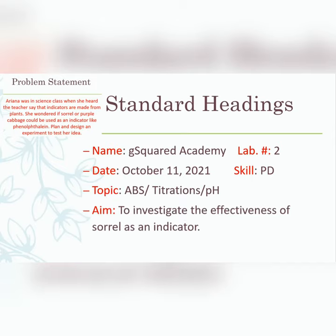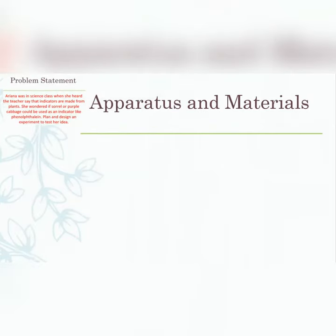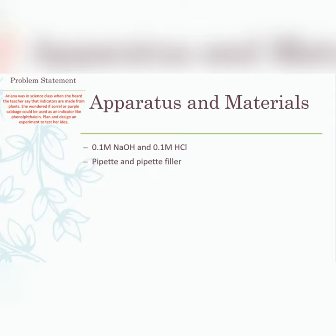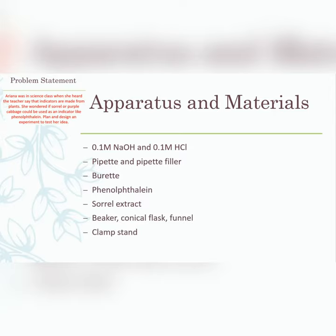Our aim today is to investigate the effectiveness of sorrel as an indicator. For materials, you will need: 0.1 molar HCl and sodium hydroxide (you could change the concentration), a pipette, pipette filler, burette, phenolphthalein, sorrel extract, conical flask, funnel, and clamp stand. I could have been lazy and said 'titration apparatus,' but I decided to list them out — and you should as well.